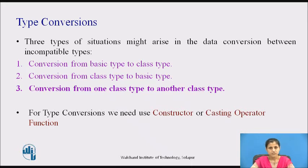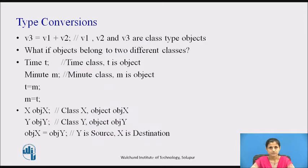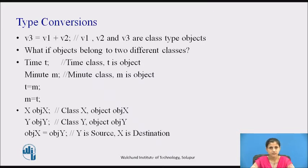For type conversions we need to use a constructor or casting operator function. Consider the statement v3 = v1 + v2, where v1, v2, and v3 are objects of the same class. The statement adds two objects and then assigns the result to a third object. When the objects are of the same class type, the operations of addition and assignment are carried out smoothly and the compiler does not make any complaints.